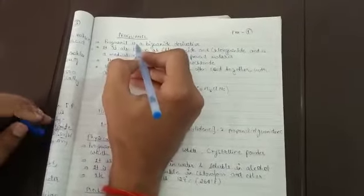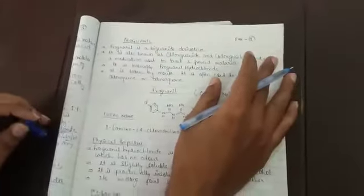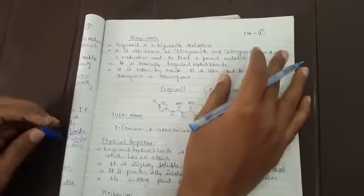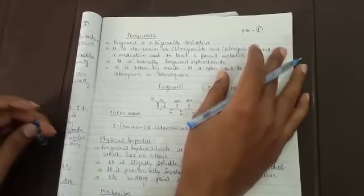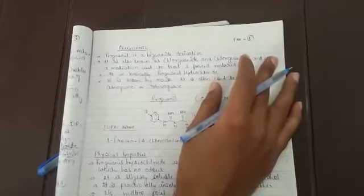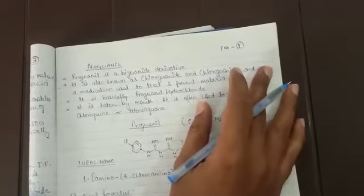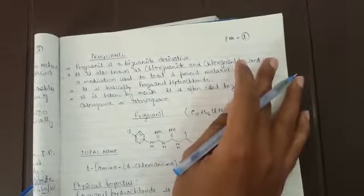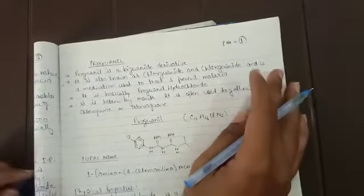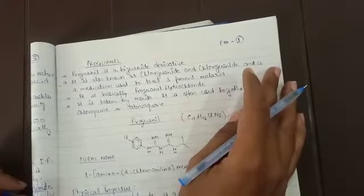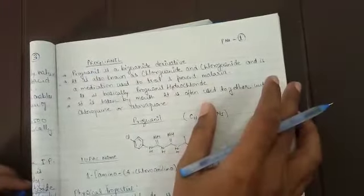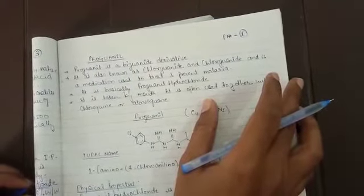Good morning second year class. We were studying about anti-malarial drugs and we have discussed most of the drugs in the anti-malarial category. Now we will today study about another anti-malarial drug whose name is proguanil. It is a biguanide derivative. Proguanil is a biguanide derivative, it is also known as chlorguanide.